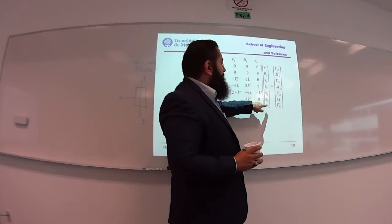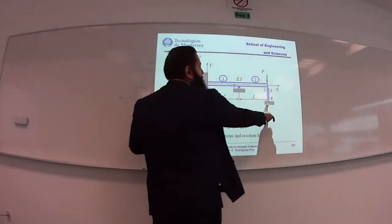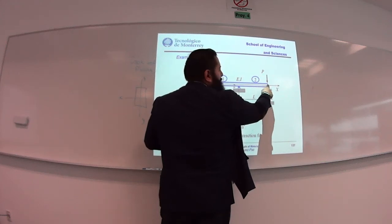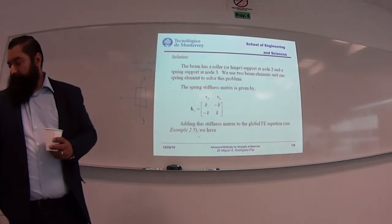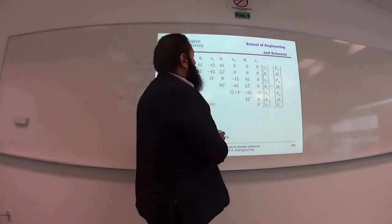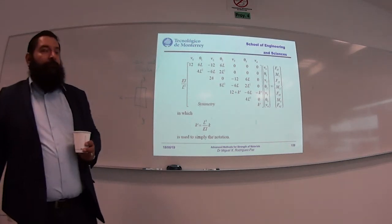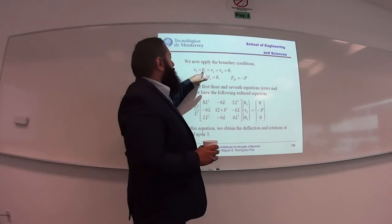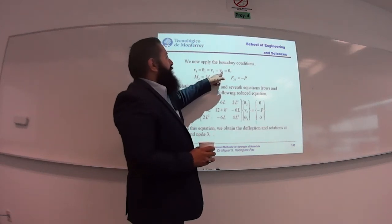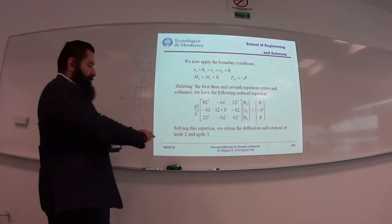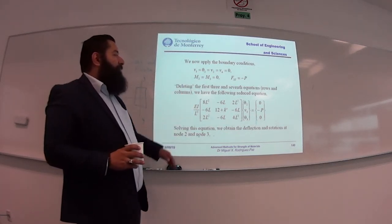Node 4, which is the second end of the spring connected to the ground, has only vertical displacement. The global finite element equation is set up. The boundary conditions are: V_1 = 0 and theta_1 = 0 at the fixed end; V_2 = 0 at the hinge support; and V_4 = 0 where the spring connects to the ground. We reduce the matrix and get a system with three unknowns and three equations.